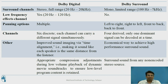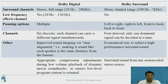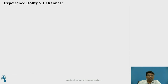The LFE channel in Dolby Digital is available from 20 Hz to 120 Hz, whereas in Dolby Surround it is not available. For panning options, in Dolby Digital the sound flows in multiple directions, whereas in Dolby Surround it flows left to right, right to left, right to back, and back to front. To experience the effect of 5.1 channel audio, please use headphones to watch the demo.